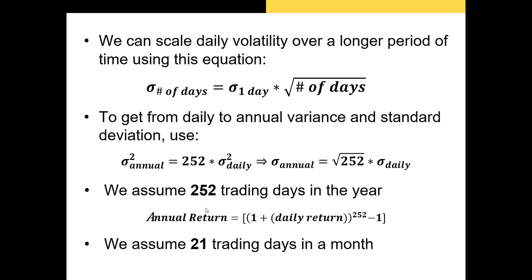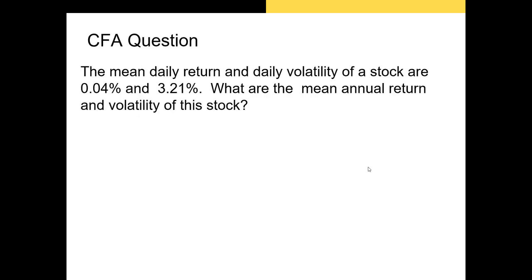Finally, you might be wondering how do we go from a daily volatility or a daily variance or a daily return to a monthly return. Well, in that case, we just scale up by 21 since it's generally considered that there's 21 trading days in a month.